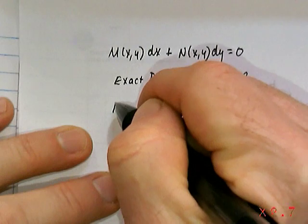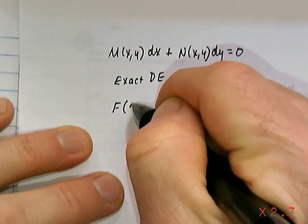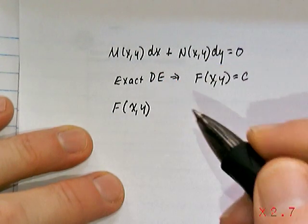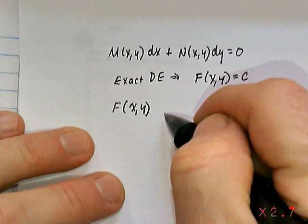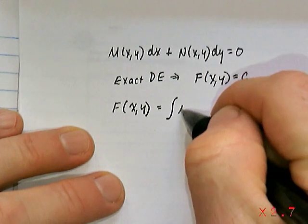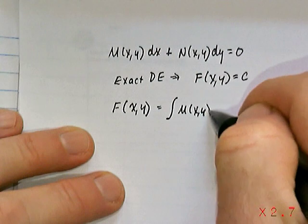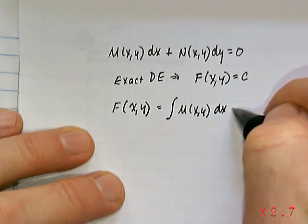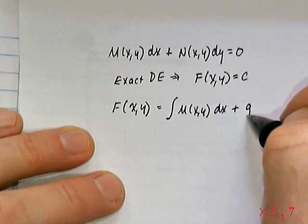The form that that solution will take on one of two forms. Either it will look like this: F(x,y) is obtained as the integral of M(x,y)dx plus some function of y we'll call g(y).